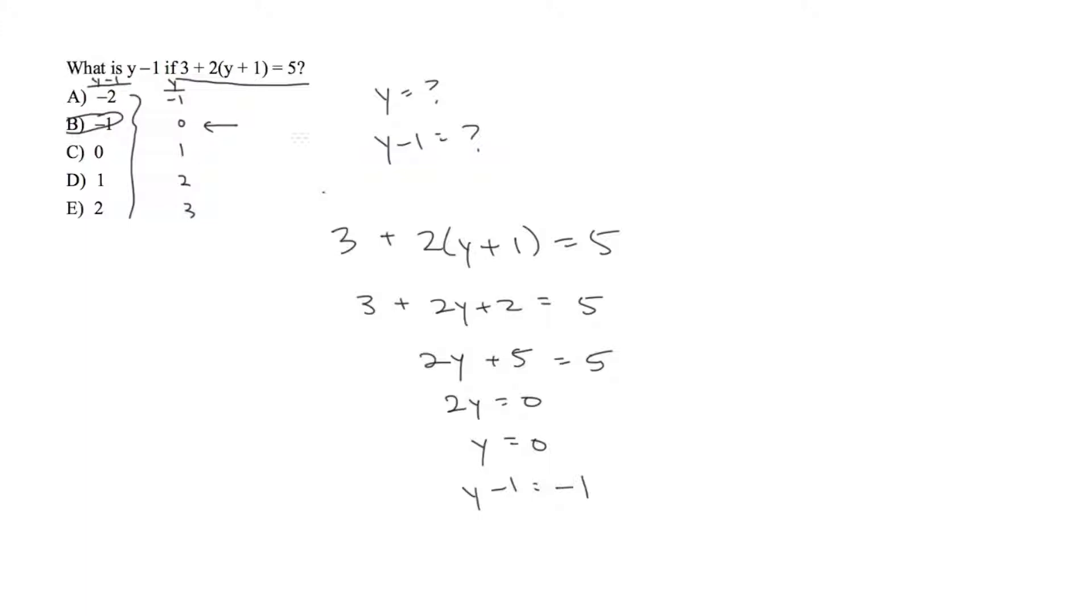Since we found B to be our answer, let's just plug that in. So again, we have 3 plus 2 times y plus 1 equals 5. If we plug in our y value, which is 0, let's see if this is true. We have 3 plus 2 times 1, which is 2, so we have 5 equals 5, which is true.